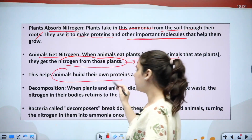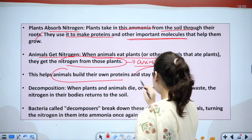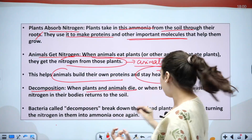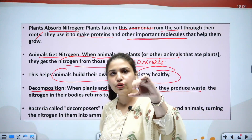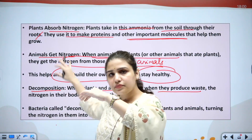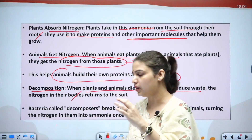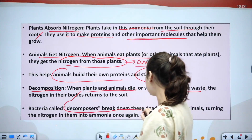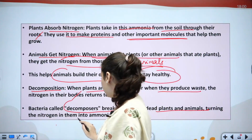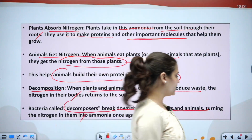When plants and animals die, or when they produce waste, the nitrogen in their bodies is released back into the soil. Bacteria called decomposers break down dead plants and animals and turn the nitrogen in them back into organic nitrogen. This is how decomposition contributes to the nitrogen fixation process.